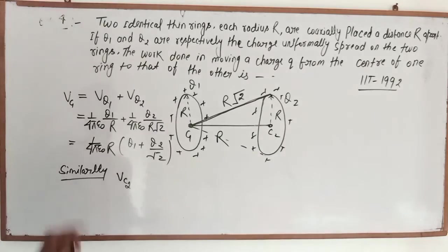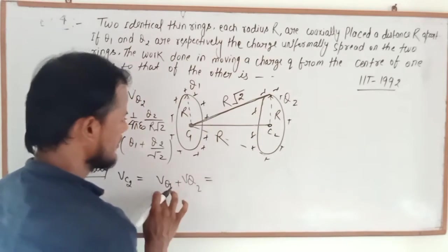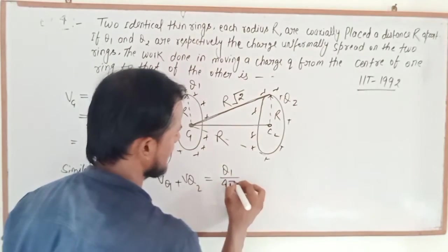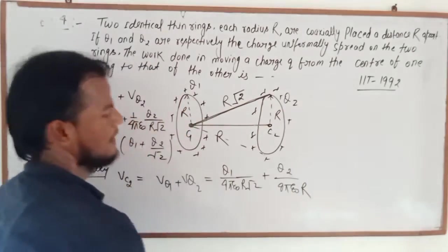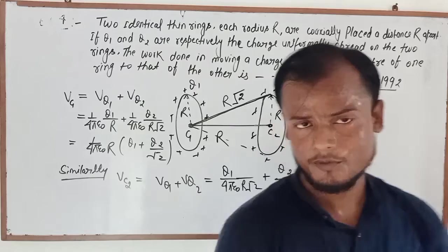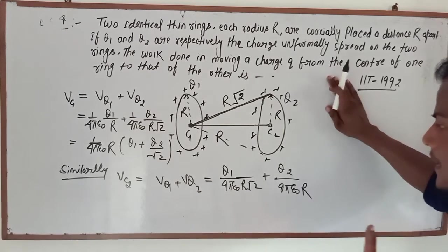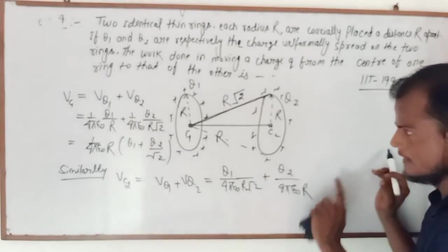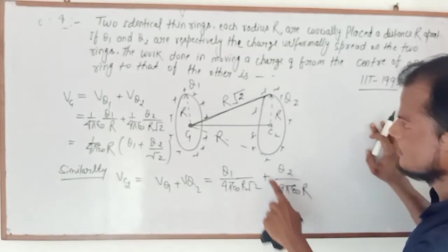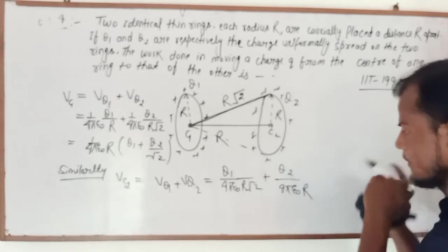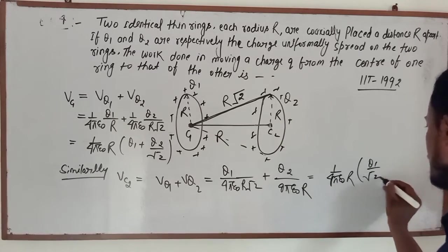Similarly, the potential at center C2. At C2, due to Q2 the distance is R, and due to Q1 the distance is R root 2. So VC2 equals Q2 divided by 4 pi epsilon naught R plus Q1 divided by 4 pi epsilon naught R root 2. If we simplify this, we get 1 upon 4 pi epsilon naught R root 2 times Q1 plus Q2.